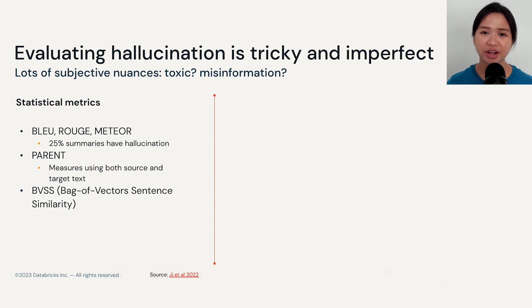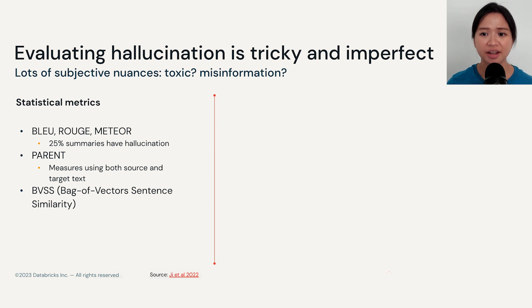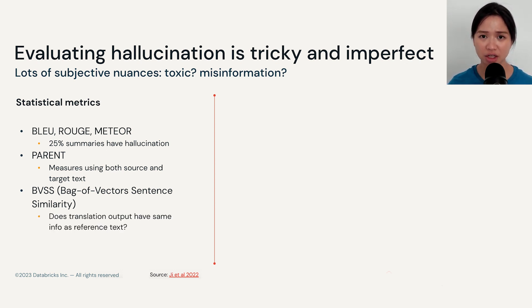The third statistical metric is called BVSS, which stands for Bag of Vectors Sentence Similarity. It measures whether the translation output has the same amount of information as the translation reference.